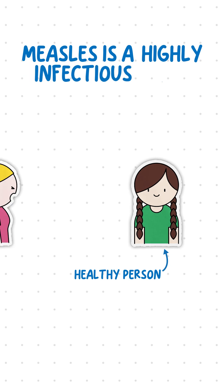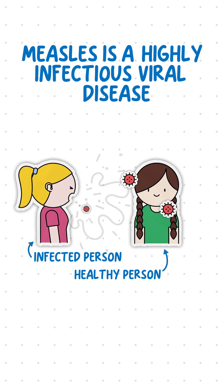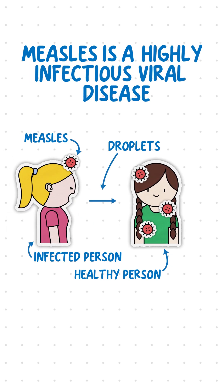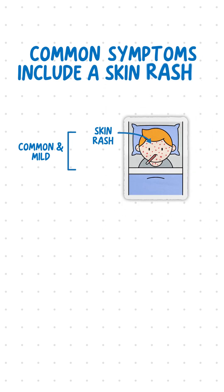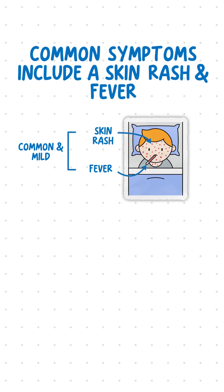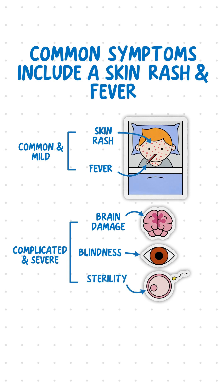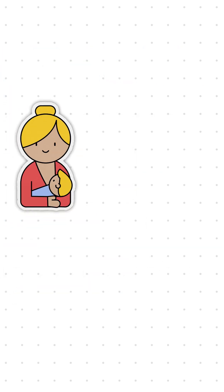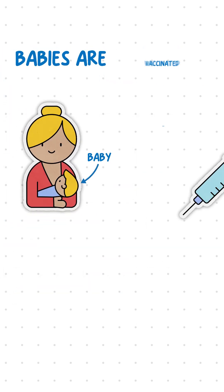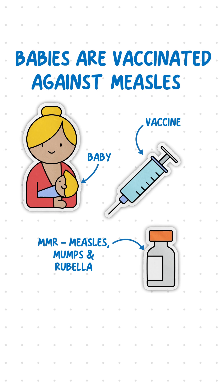Measles is a highly infectious viral disease spread by inhaling droplets from sneezes and coughs of infected people. Common symptoms include a skin rash and fever, which are usually harmless. However, complications can lead to brain damage, blindness, sterility, or even death. Due to these risks, babies are vaccinated against measles as part of the MMR vaccine.